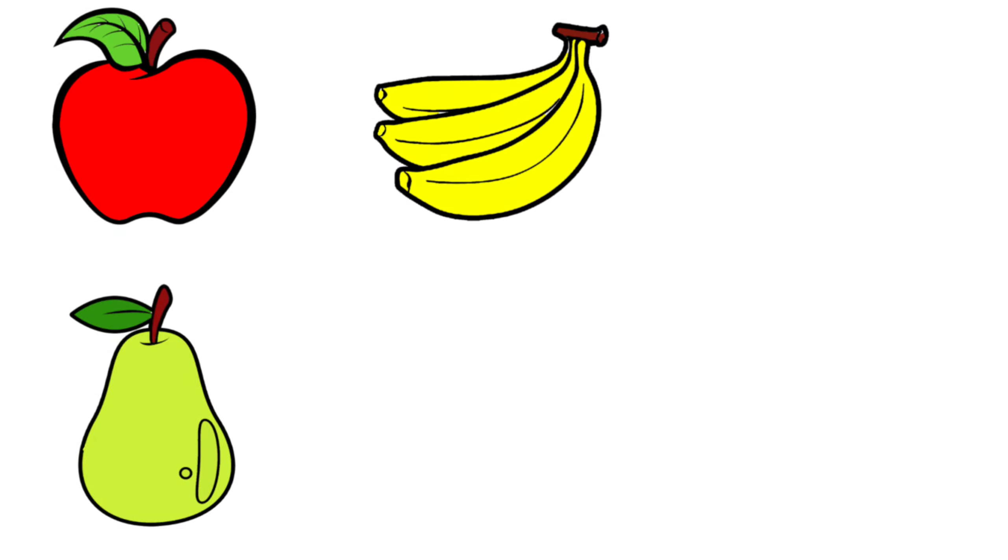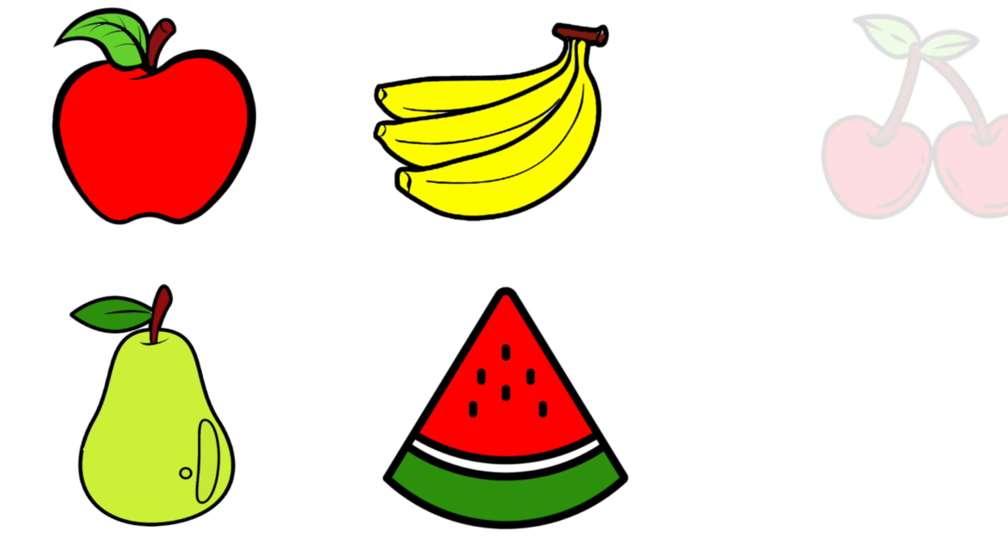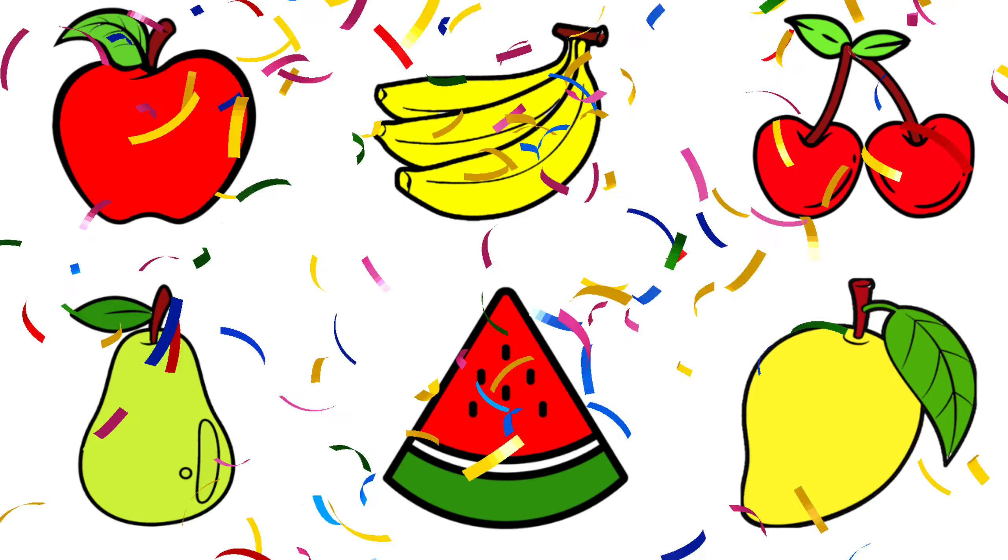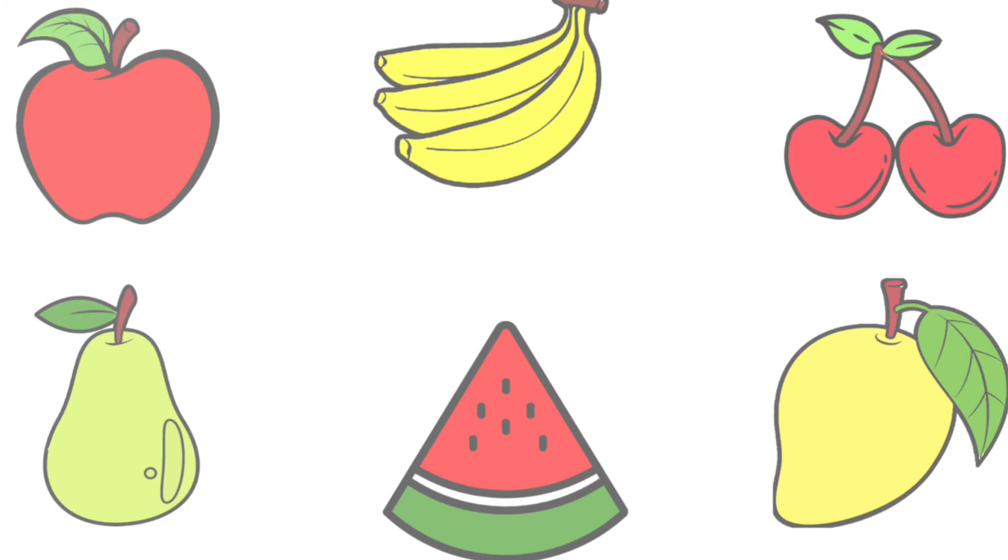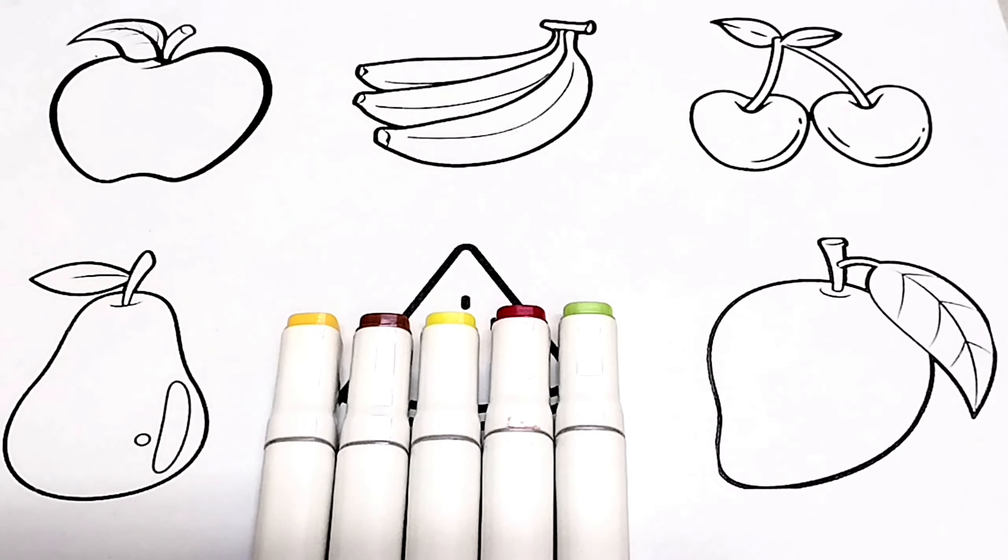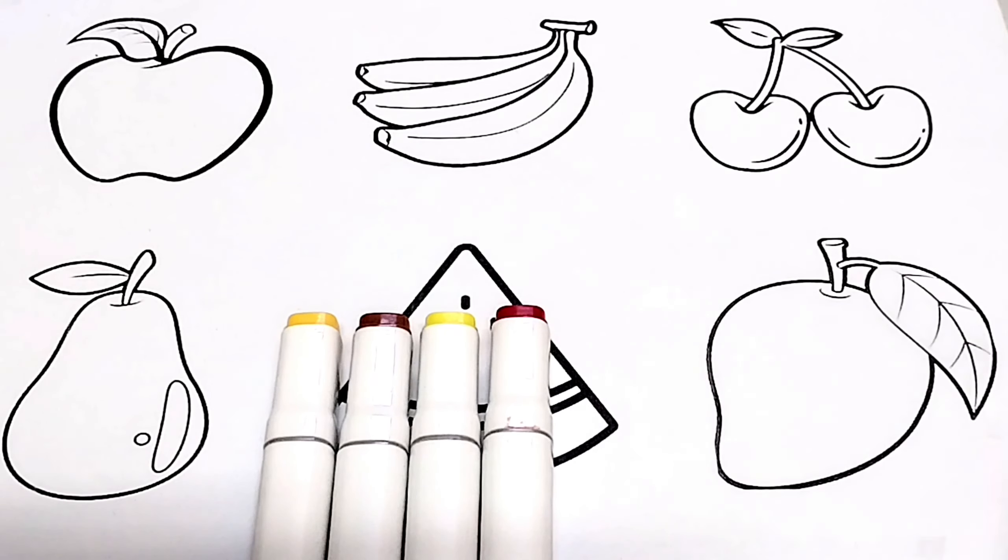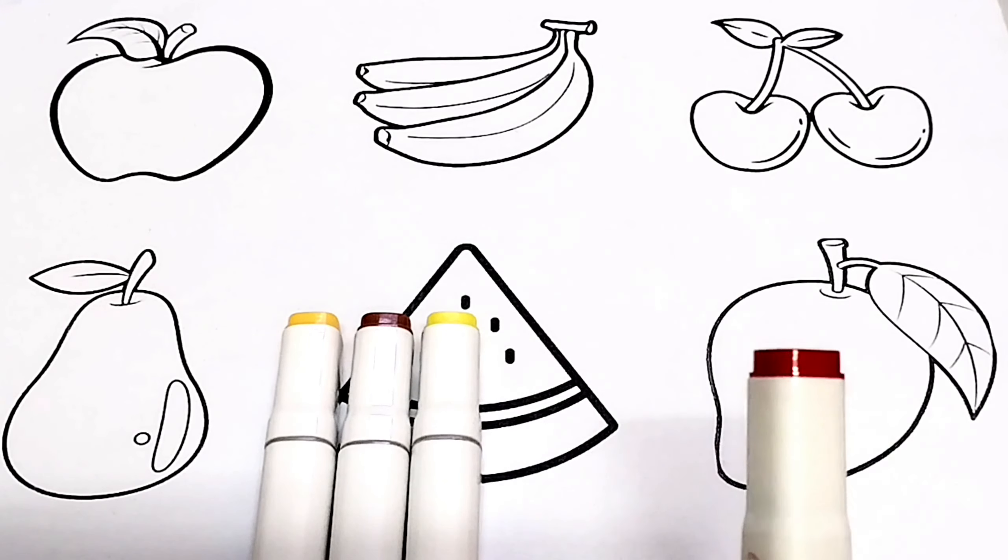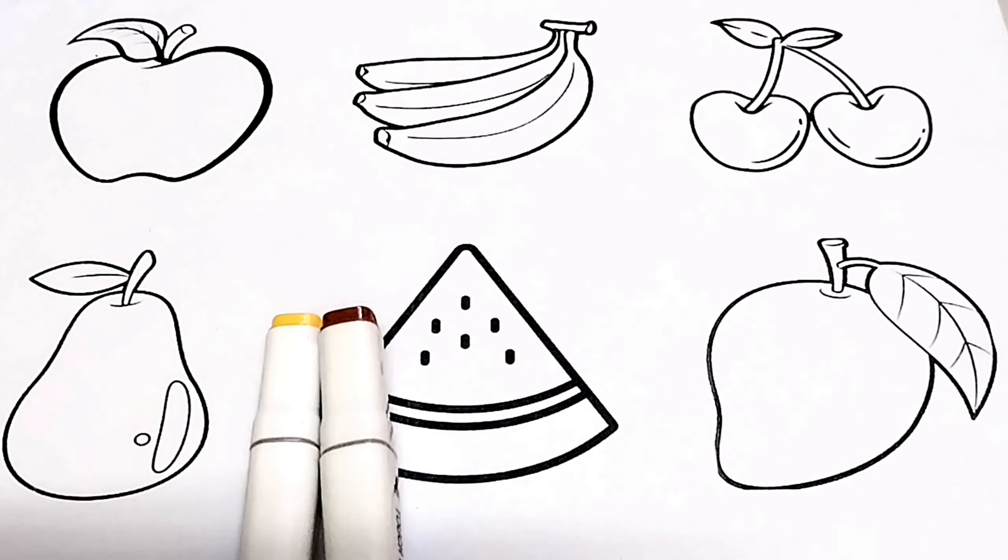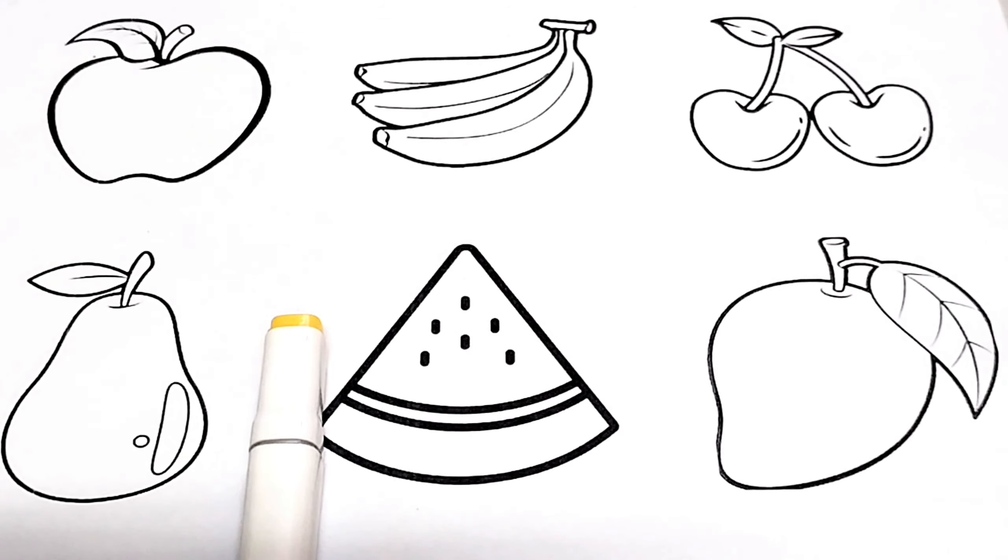Apple, pear, banana, watermelon, cherries, mango. Green color, light green color, red color, yellow color, brown color, lemon color.